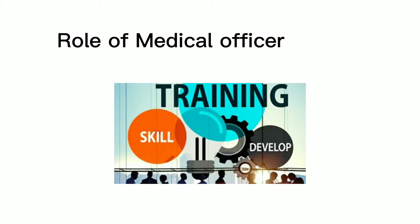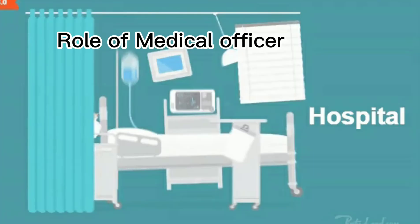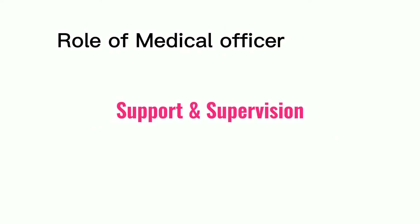Starting with the role of medical officer: the medical officer provides skills to the team members. Their responsibility also includes ensuring the supply of medicine items required in the subcentres, primary health centres, community mental health centres, and psychiatric hospitals. They also provide support and supervision of other care personnel.